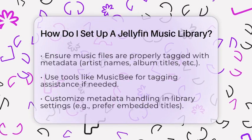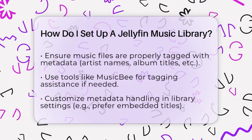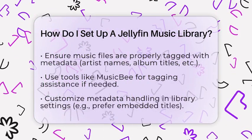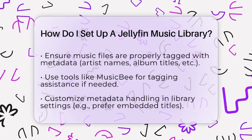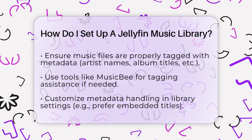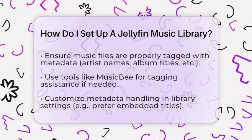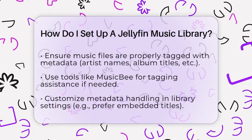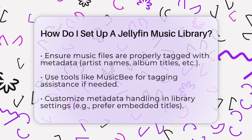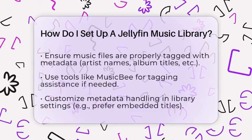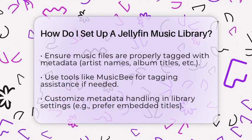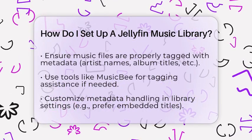In the library settings, you can customize how Jellyfin handles metadata. For example, you can choose to prefer embedded titles over file names. If you want to manage metadata manually, you can disable automatic internet downloads. Additionally, you can enable saving artwork into your media folders so album art stays with your files.